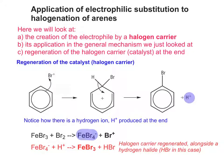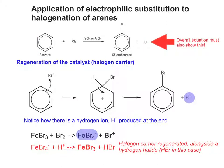So we get the halogen carrier back and also a hydrogen halide — HBr in this case. The overall equation must also show the HBr, HCl, or the hydrogen halide as a product. It's really important that you have the correct products — both of them.